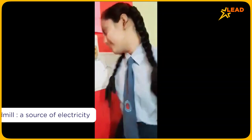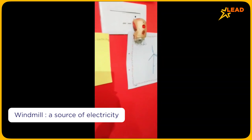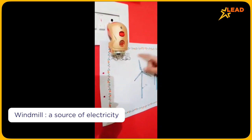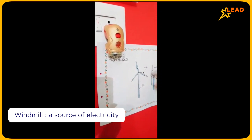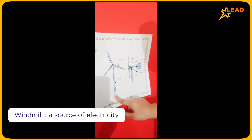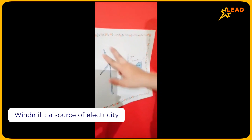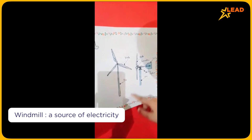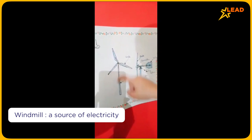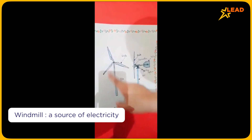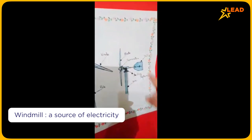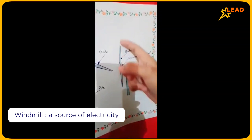Next is where we get electricity from. We get electricity from a windmill. A windmill is this type of structure — it has blades and a long thick stick like a pole. This is the structure of a windmill.